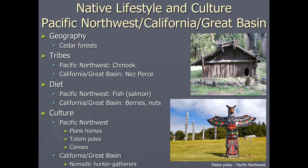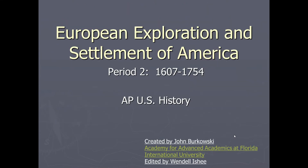In the Pacific Northwest, along California and the Great Basin, the geography centered around cedar forests in the upper northwest. The Chinook and the Nez Perce were the main tribes located there. They did a lot of fishing off the Pacific, especially salmon, and in California had access to berries and nuts. They typically built plank homes, were known for their totem poles and canoes, and were nomadic hunters and gatherers.